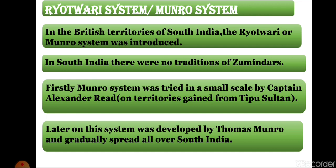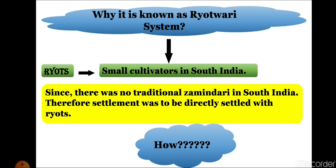The Ryotwari system was first tried on a trial basis on a small scale by Captain Alexander Reed on territories gained from Tipu Sultan. Later the system was developed by Thomas Munro and gradually spread all over south India. Since Thomas Munro developed it, this system is also known as the Munro system.